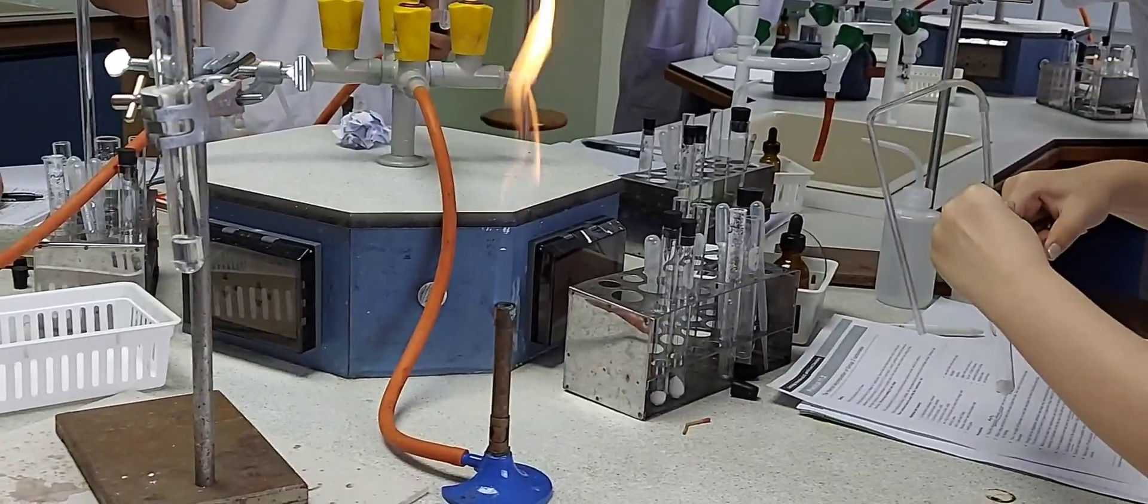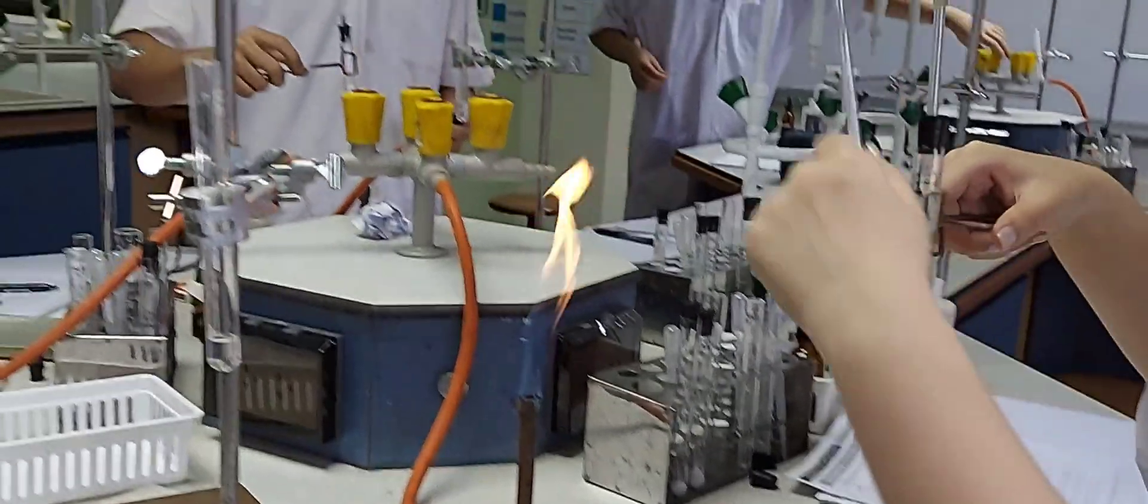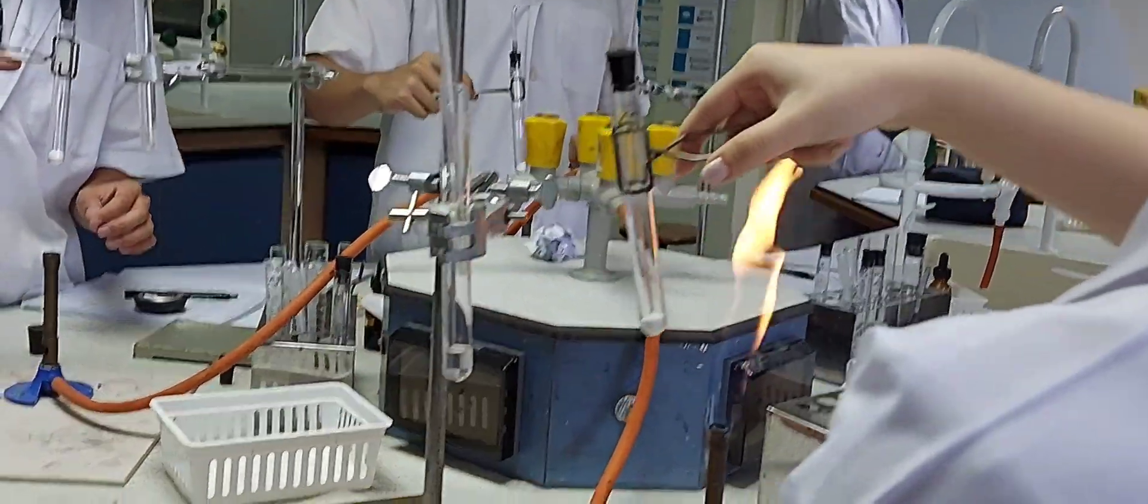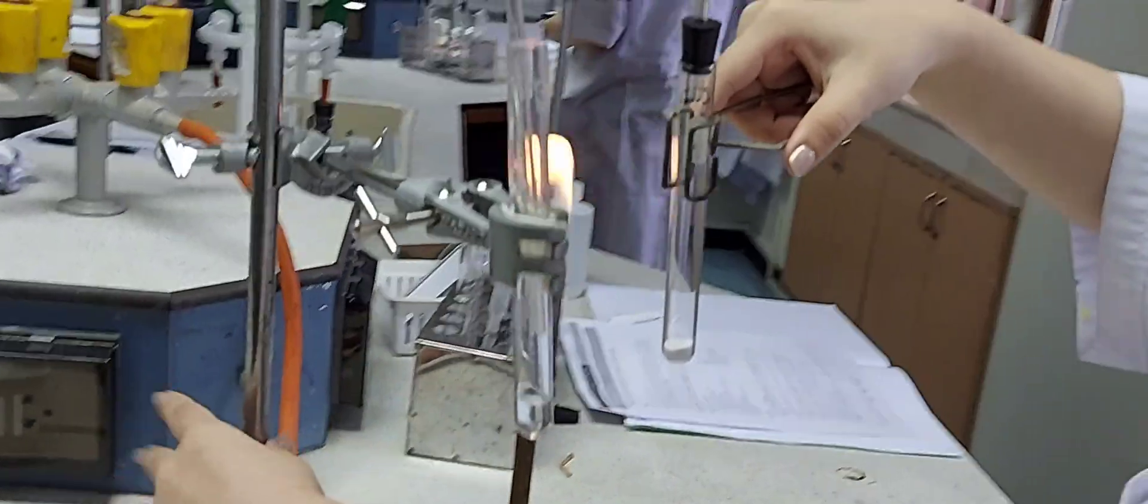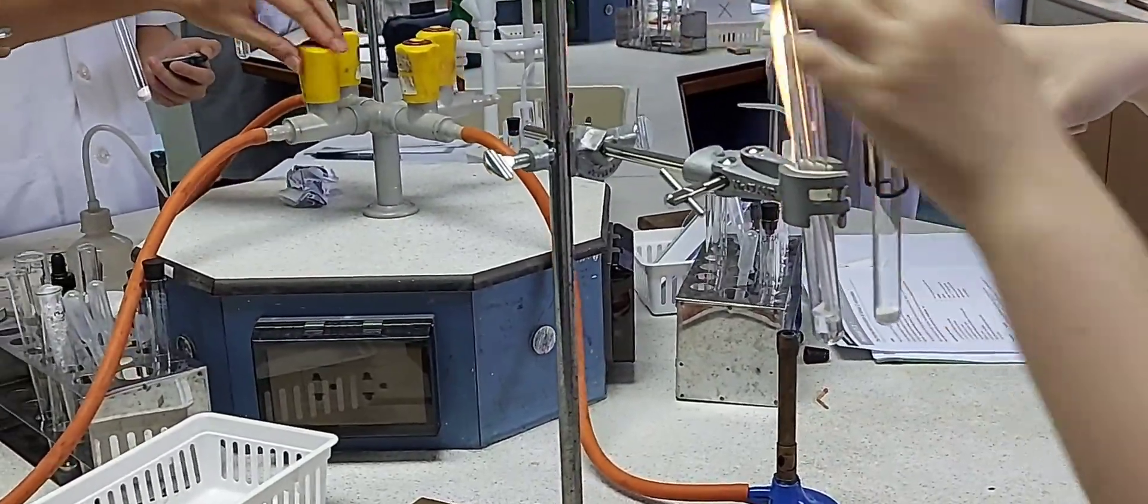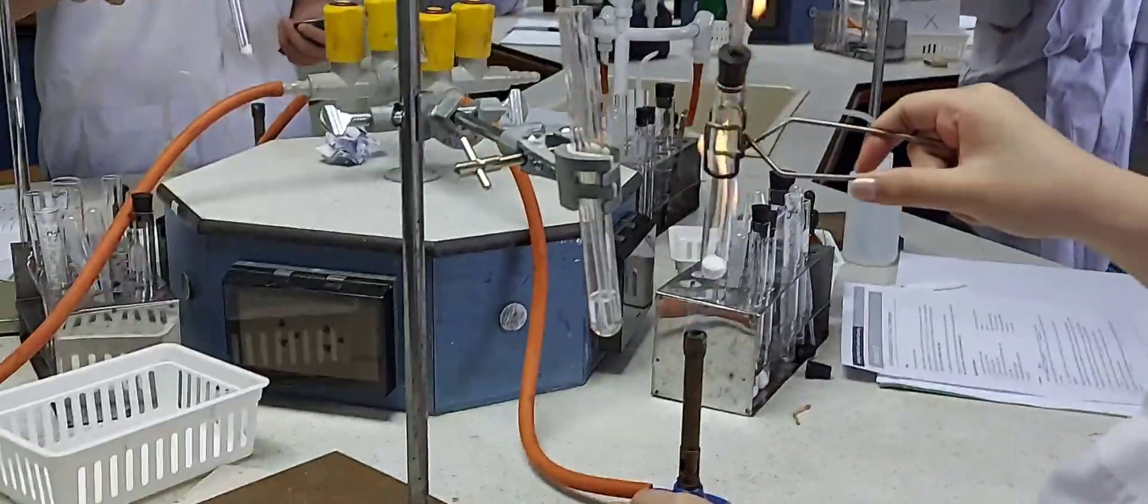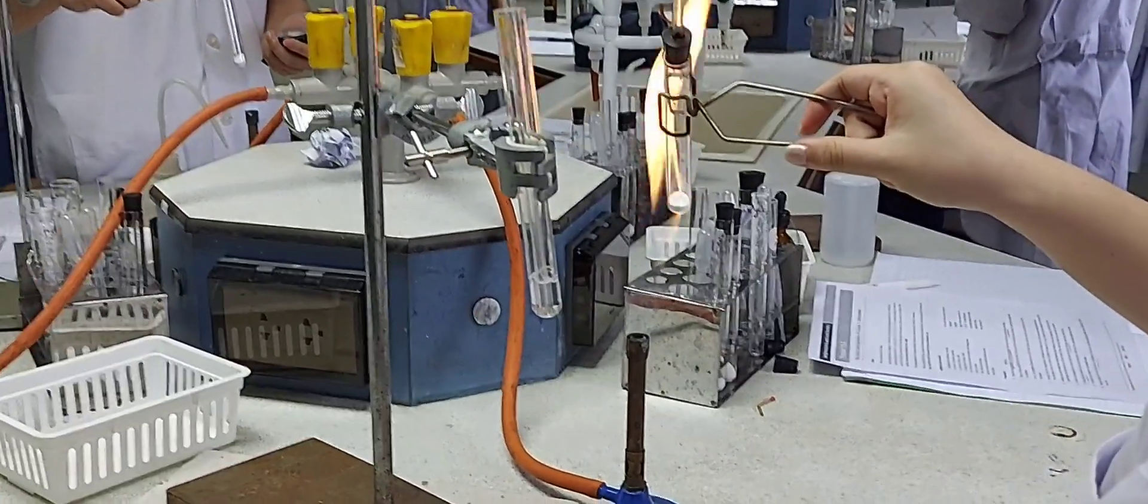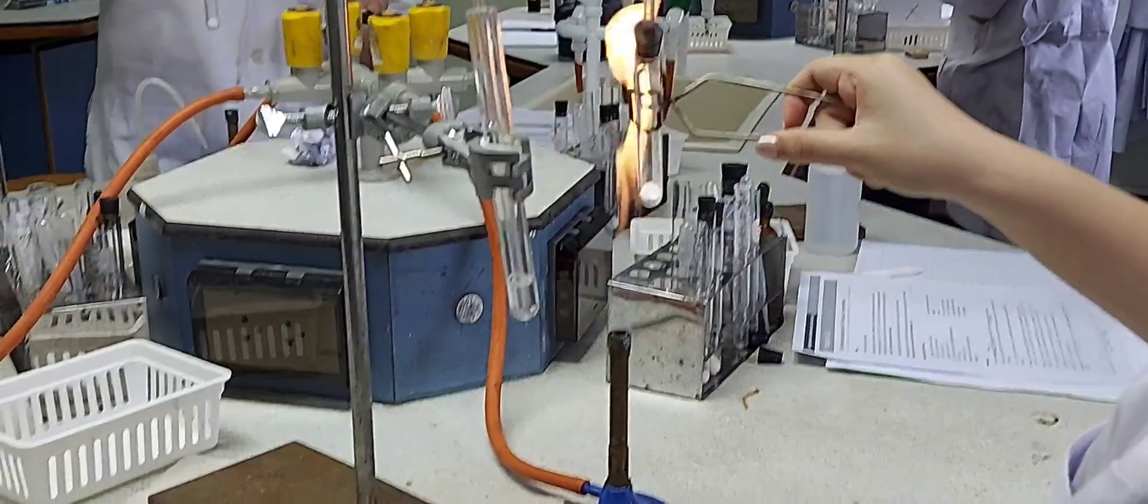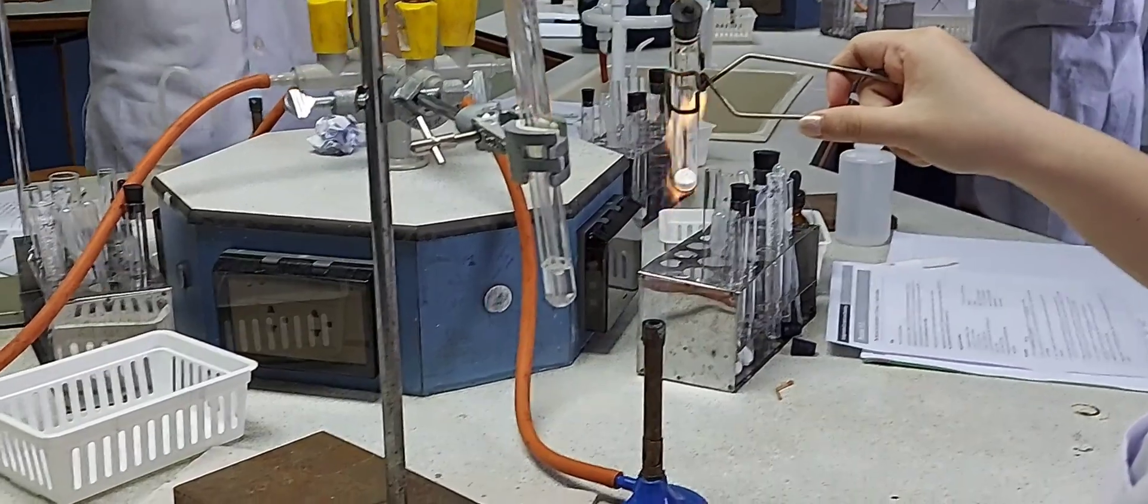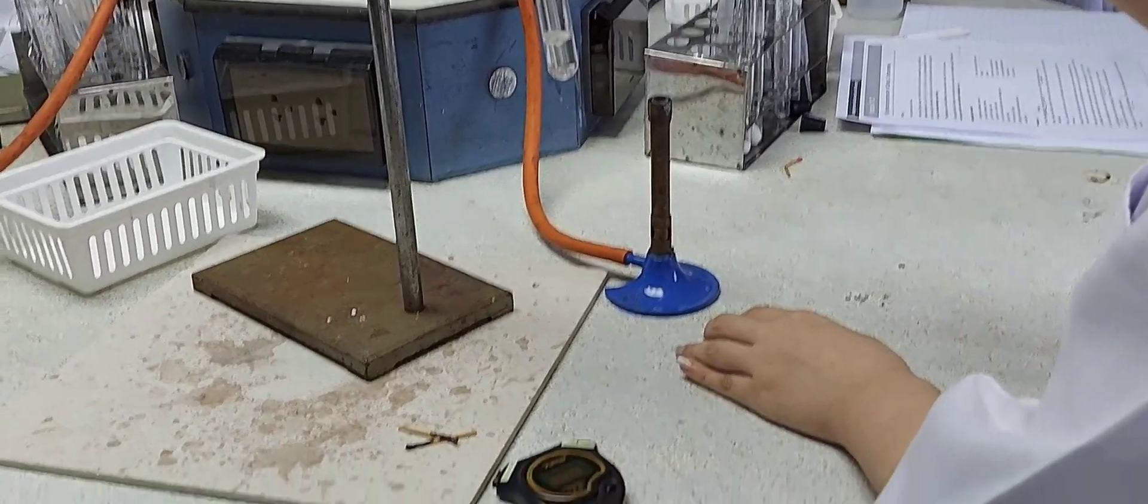The next will be heating calcium carbonate and you will see that this time you may be required to heat it a little more stronger and for a longer period of time because of the position of calcium metal below magnesium in the group two. So again, the lime water is taken in another test tube and clamped onto the clamp stand and the test tube with calcium carbonate is heated strongly.